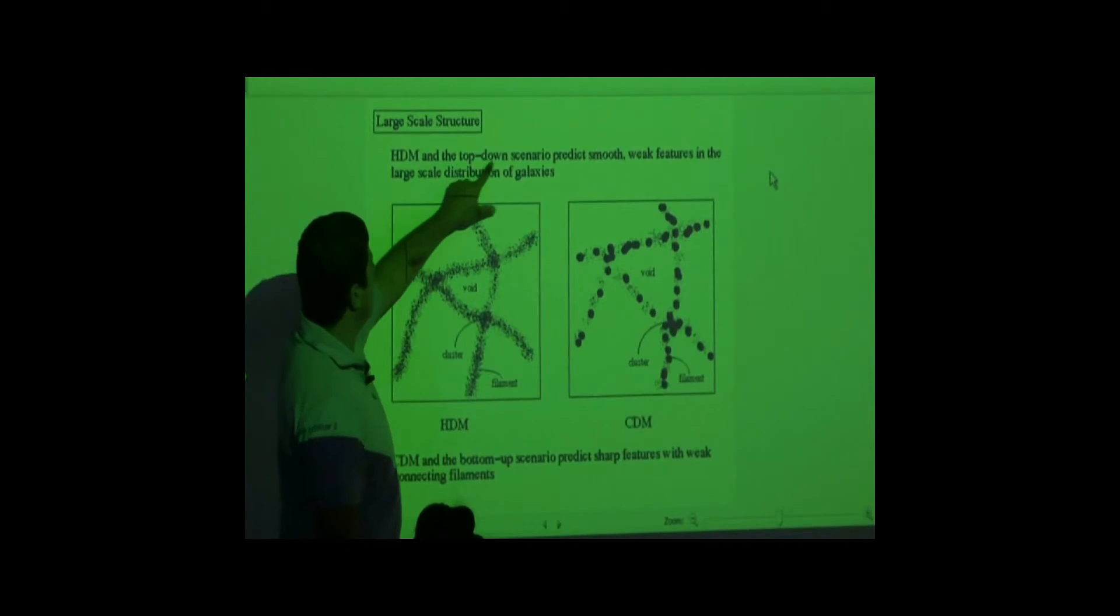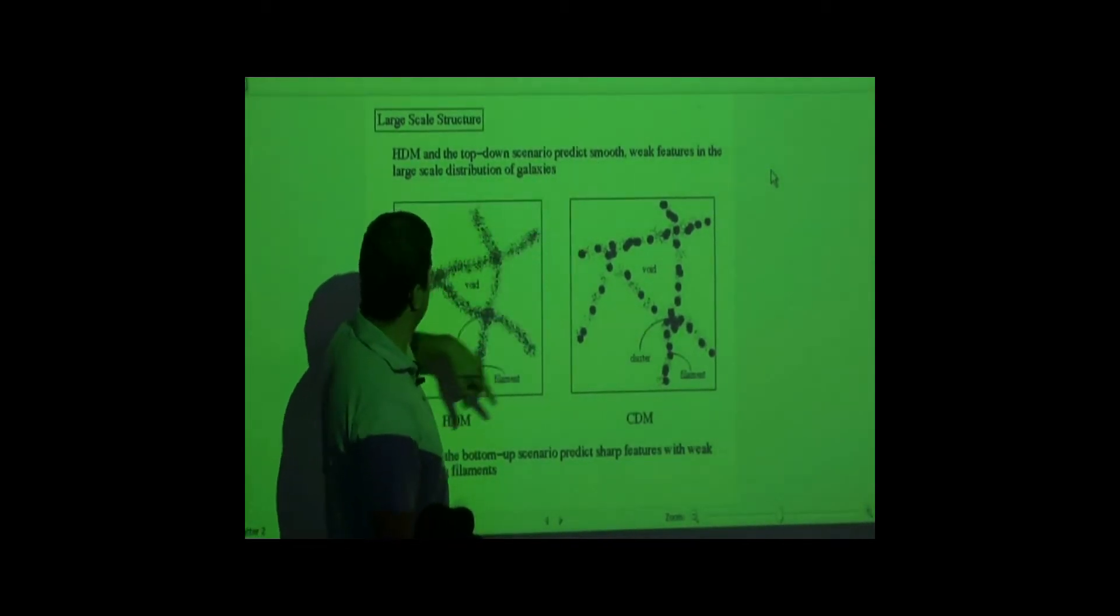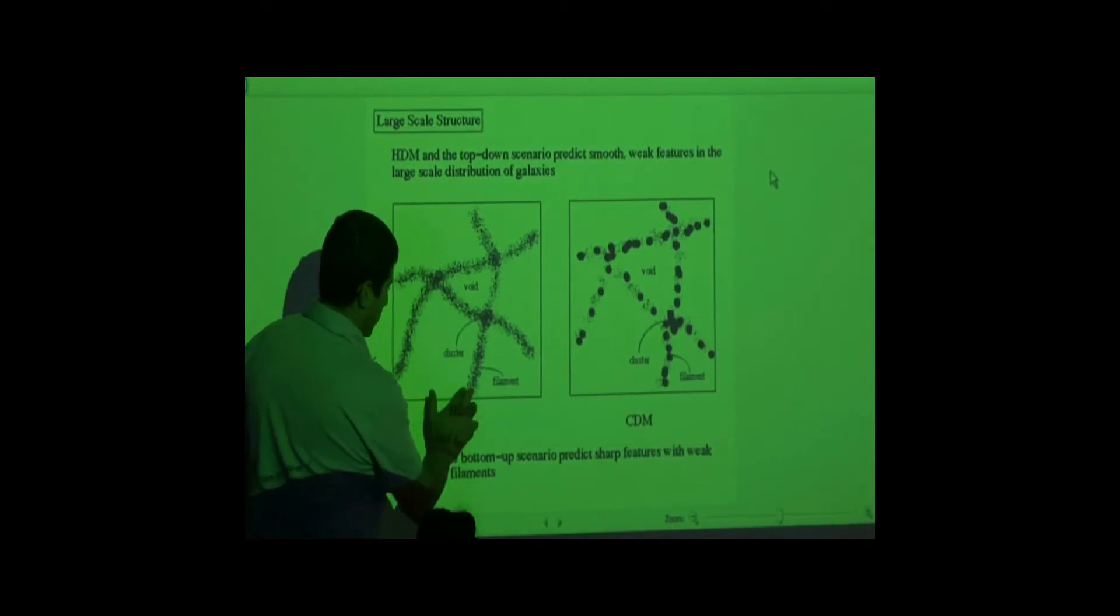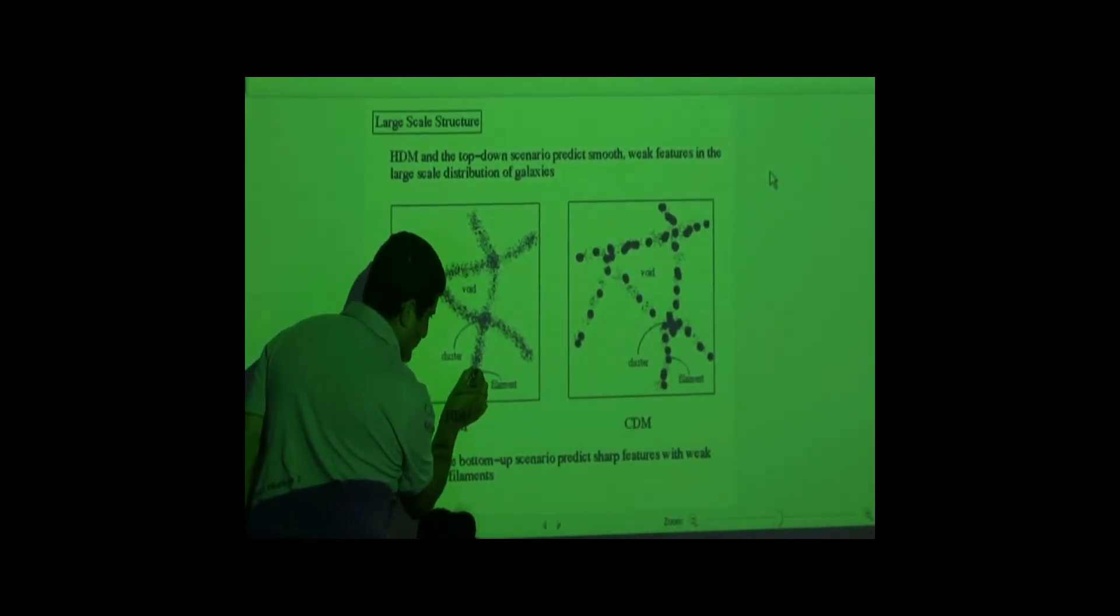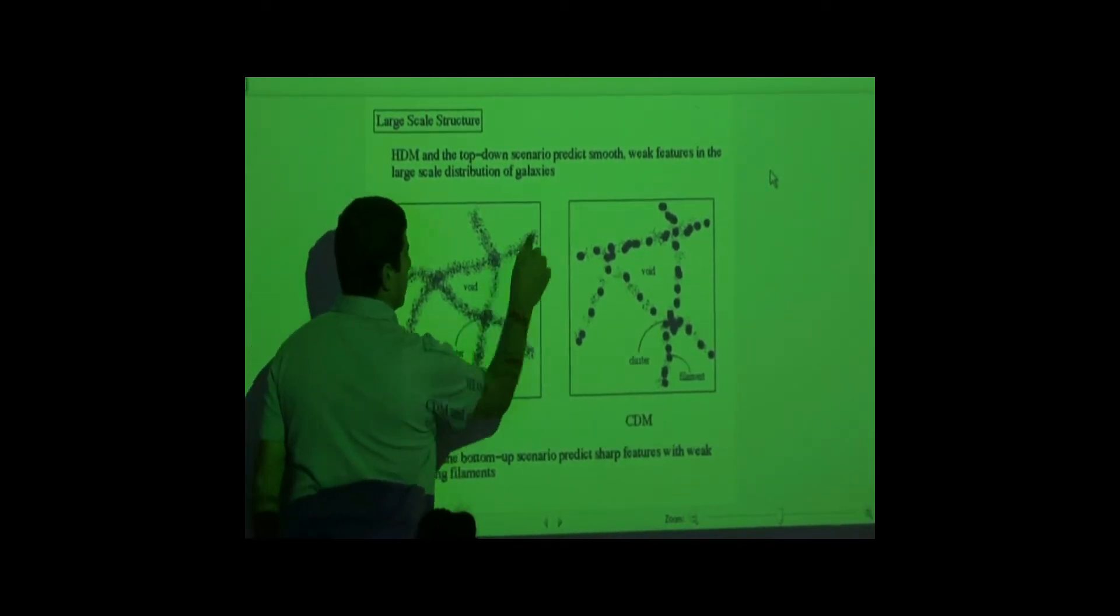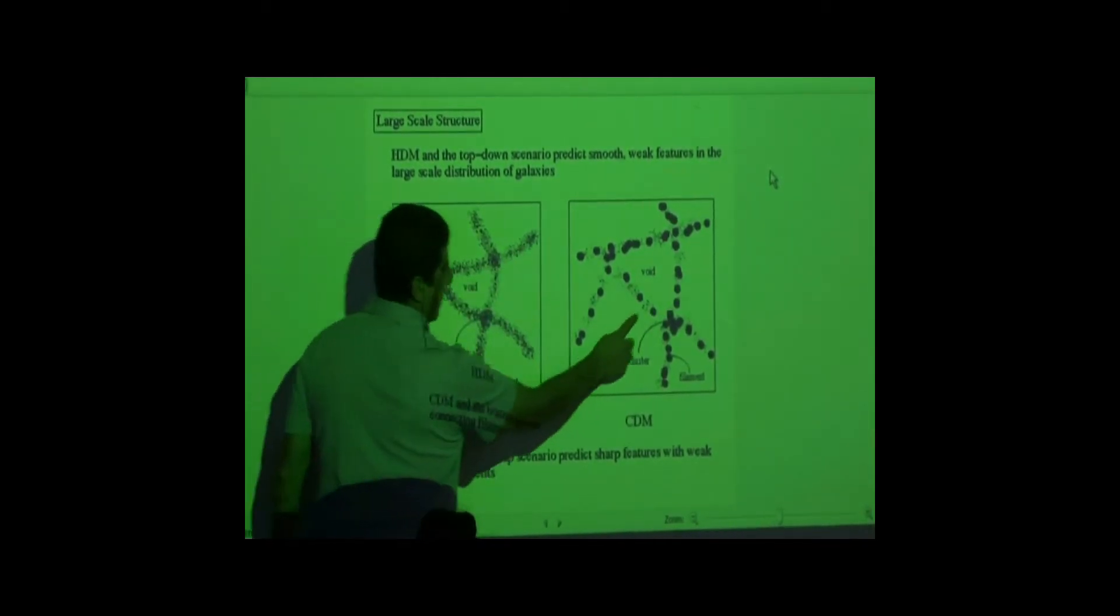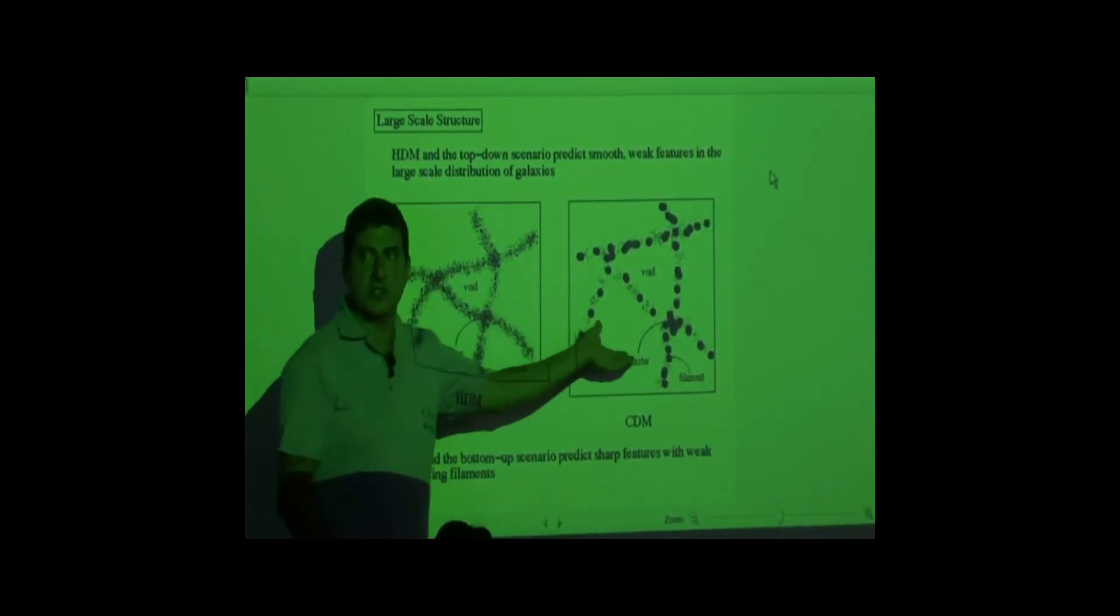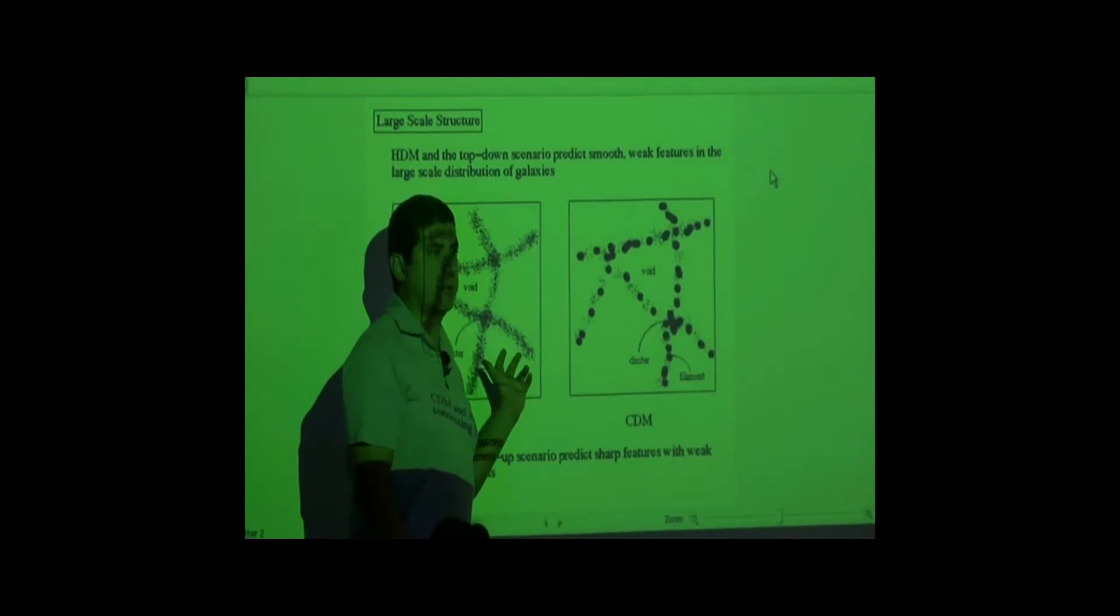HDM model and the top-down scenario predict smooth, weak feature in the large-scale distribution of galaxies. So you see here, the galaxies are not very strongly clustered, but the feature itself are very smooth. There aren't gaps between them like this. So that's one way we can tell. Study the universe structure, see what kind of dark matter we can get.